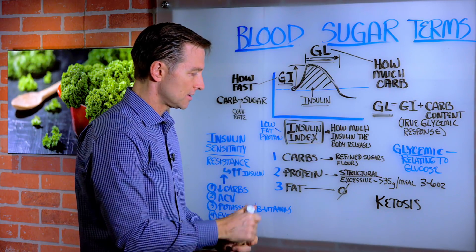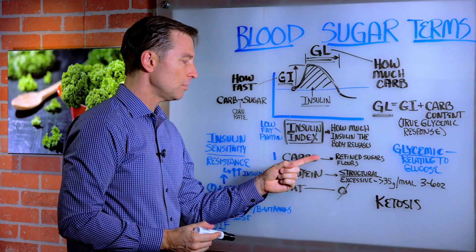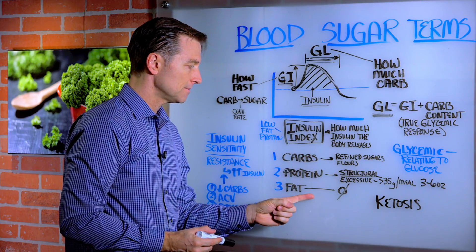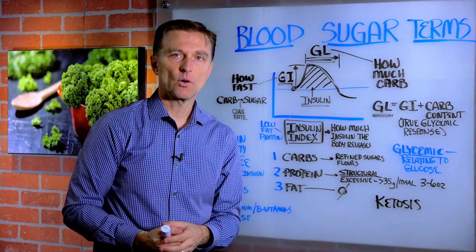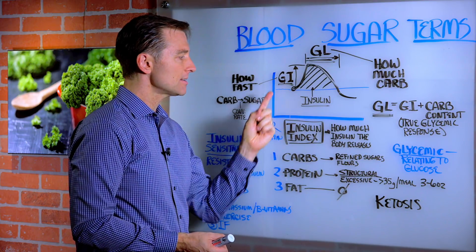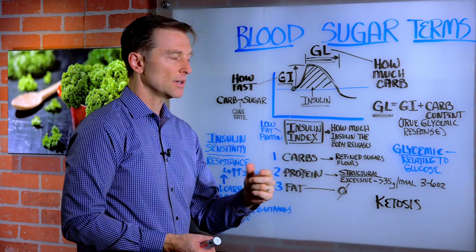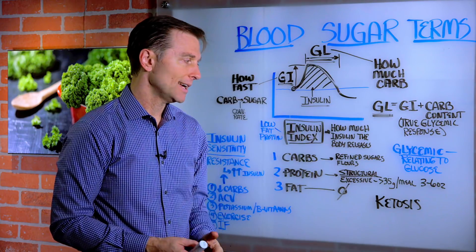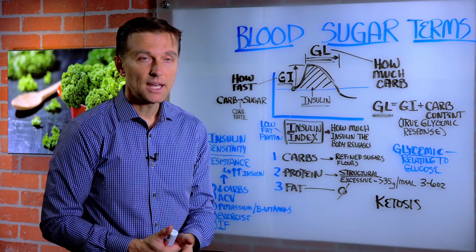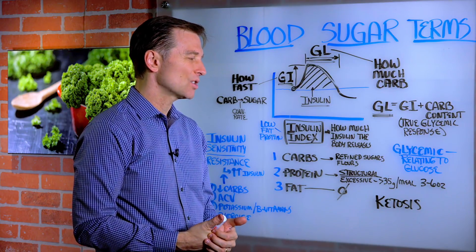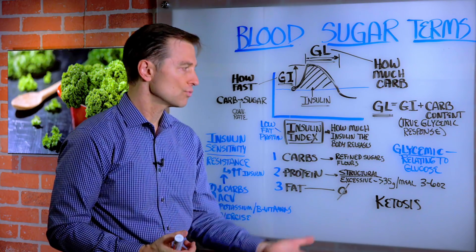Carbohydrates, proteins, and fats are called macronutrients. Carbohydrates are going to be the thing that spikes blood sugar and insulin most. At the top of the list you have refined sugars, high fructose corn syrup, refined grains, corn, and starches — these are what raise it.